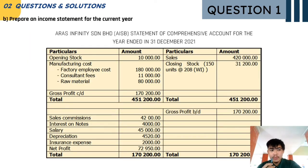The question also asks us to prepare an income statement for the current year. The income statement shows a total amount of RM451,200 and RM170,200.